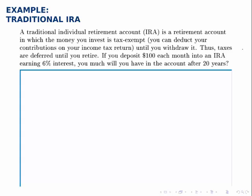A traditional IRA, or individual retirement account, is a retirement account in which the money you invest is tax-exempt until you withdraw it. Now that doesn't really come into this problem, but I mentioned it for your interest. The question asks: if you deposit $100 each month into an IRA that earns 6% interest, how much will you have in the account after 20 years?